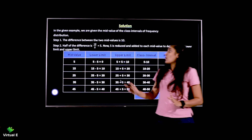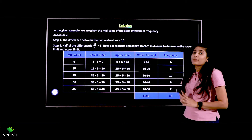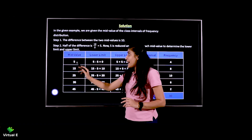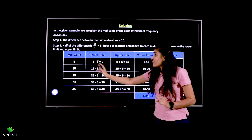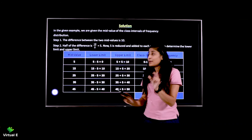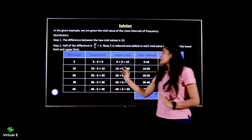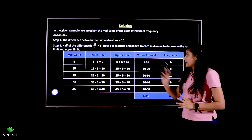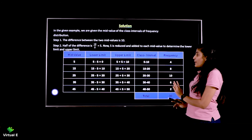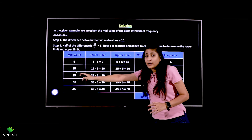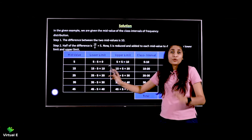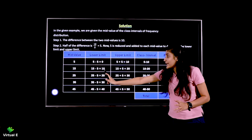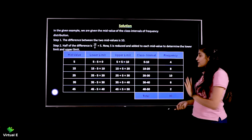10 divided by 2 gives you 5. Now, 5 is both reduced from and added to each mid value. For the first mid value 5: 5 minus 5 gives 0 — that is the lower limit; 5 plus 5 gives 10 — that is the upper limit. So the first class interval is 0 to 10. For the next mid value 15: 15 minus 5 gives 10 and 15 plus 5 gives 20 — so the next class is 10 to 20. The frequencies given remain the same.